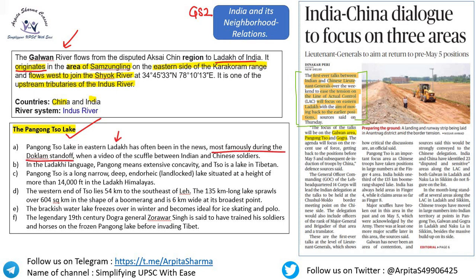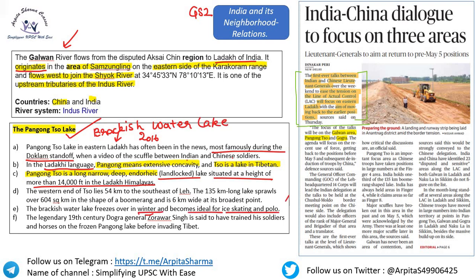Pangong So Lake in Eastern Ladakh has often been in news — most famously during the 2016 standoff when a video of a scuffle between Indian and Chinese soldiers was released. In Ladakhi, 'Pangong' means extensive concavity, and 'So' is lake in Tibetan. It is a long, narrow, deep endorheic (landlocked) lake at more than 14,000 feet in the Ladakh Himalayas. It is a brackish water lake — not fresh water — and freezes in winter.